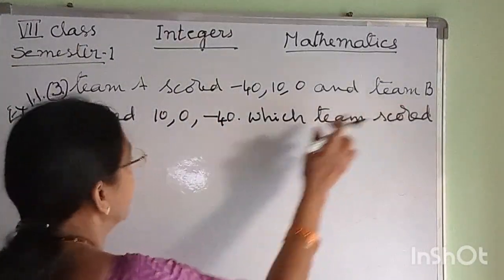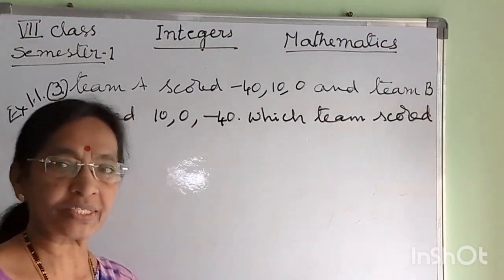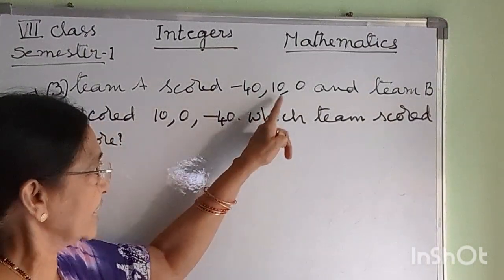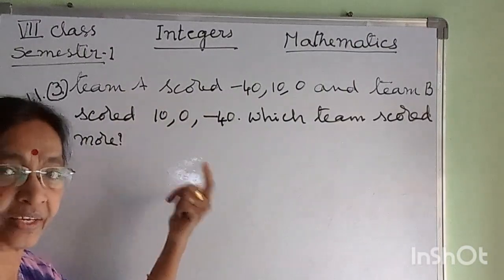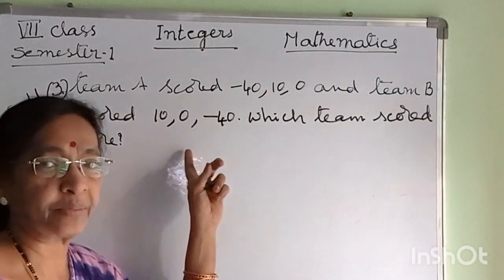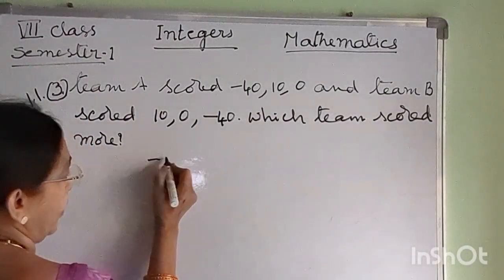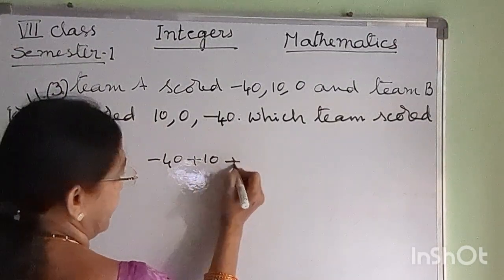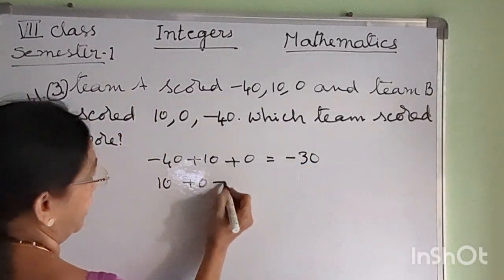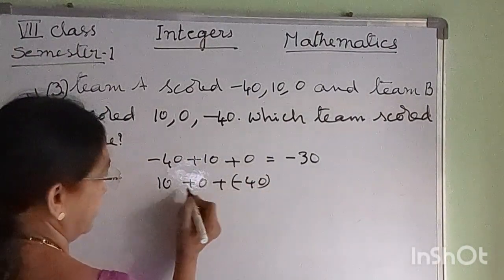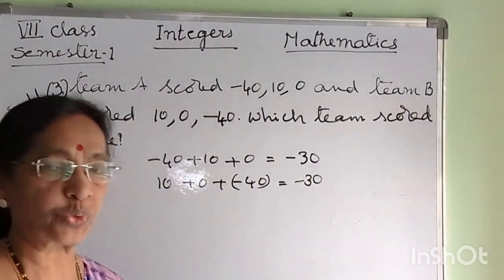Exercise 1.1, third problem: In a quiz, team A scored minus 40, 10, 0 and team B scored 10, 0, minus 40. Which team scored more? Both teams scored the same because minus 40, 10, and 0 are the same scores but in different order. The sum of integers is the same in whatever order we add. Verify: minus 40 plus 10 plus 0 equals minus 30; 10 plus 0 plus minus 40 also equals minus 30. Therefore both teams scored the same.